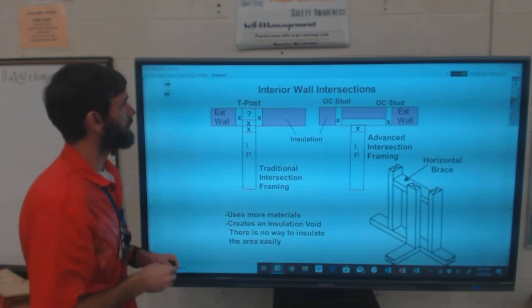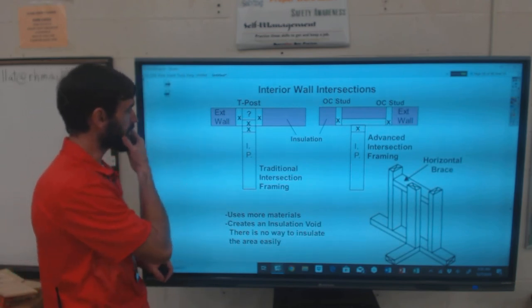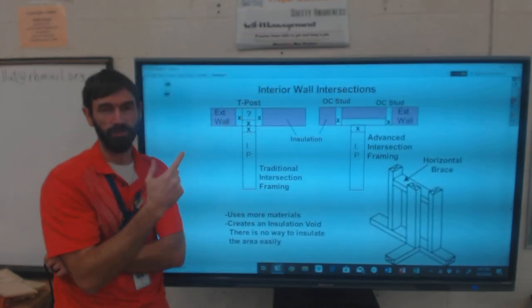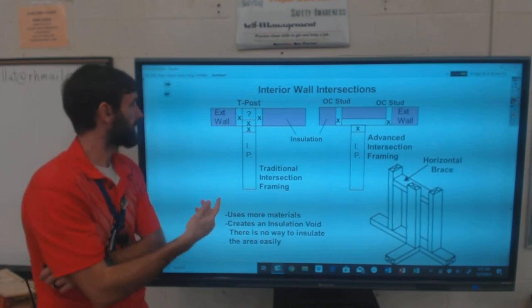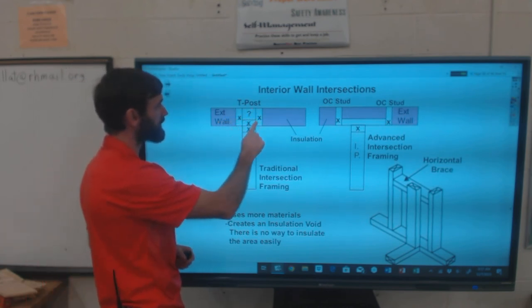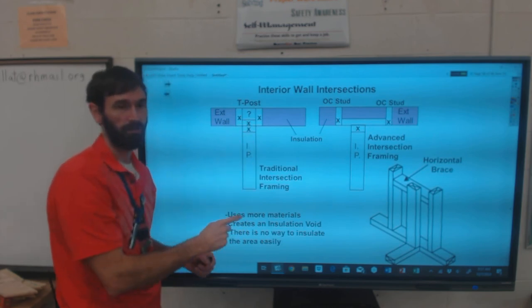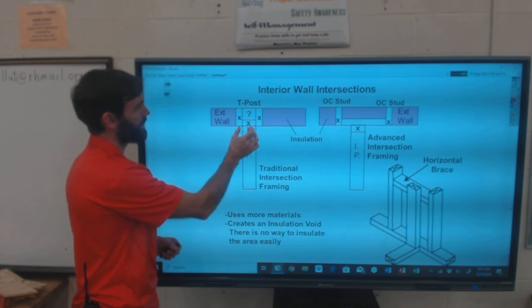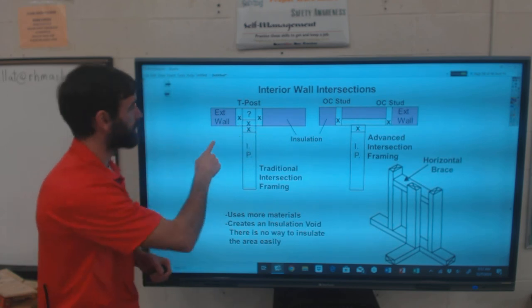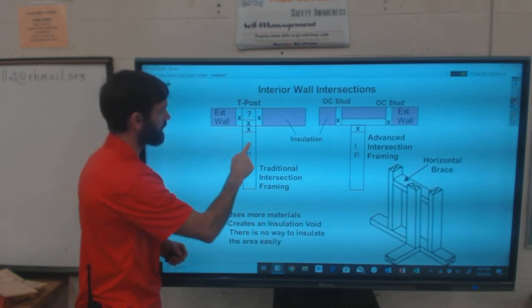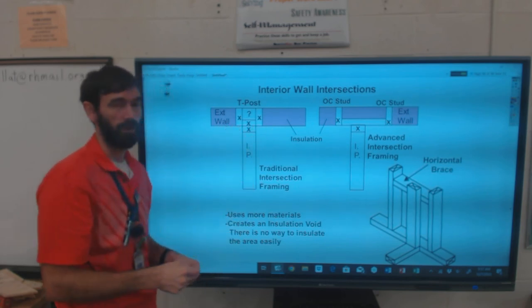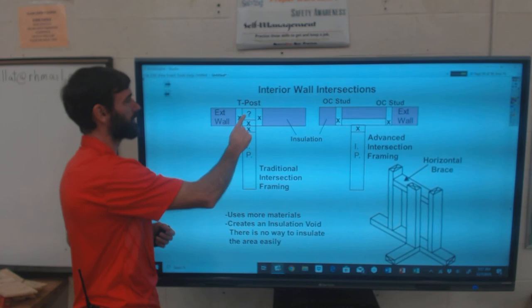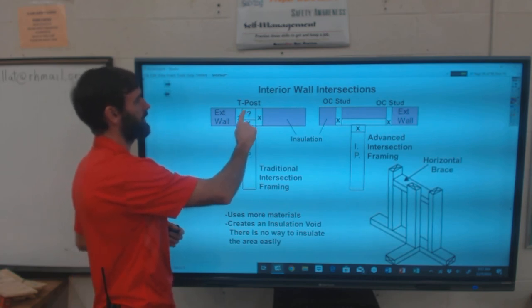The last thing I want to talk about is interior wall sections. That wall partition assembly that I showed you earlier, we used to call a T-post, where you have full stud here, full stud here, and either a full stud or blocking. Your interior partition matches right up with the blocking or that center stud, and you have something to attach drywall here, here, here, and there. Everything's good. The problem with this is it uses more materials and it creates an insulation void.